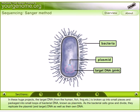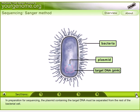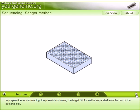In these huge projects, the target DNA from human, fish, dog, etc. is broken up into small pieces and packed into small loops of bacterial DNA known as plasmids. As the bacterial cells grow and divide, they replicate the plasmid, which acts as a target. This target DNA will be replicated along with the bacteria's own DNA.